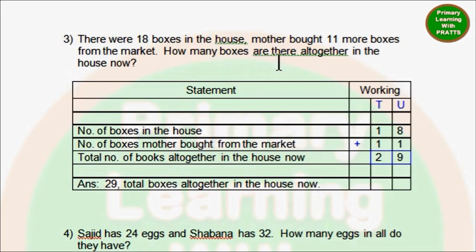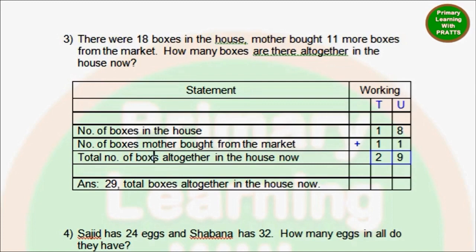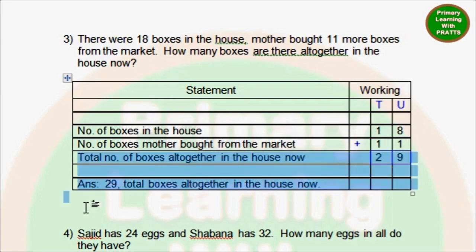What are they asking us? How many boxes are there altogether? So: Total number of boxes altogether in the house now. 8 plus 1 is 9, 1 plus 1 is 2. Answer: 29 total boxes altogether in the house now.